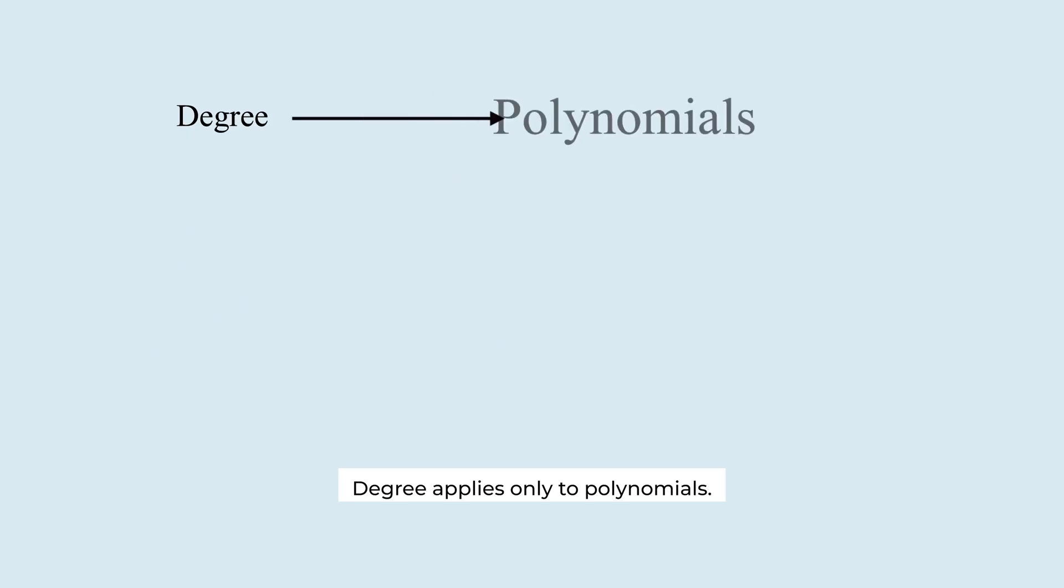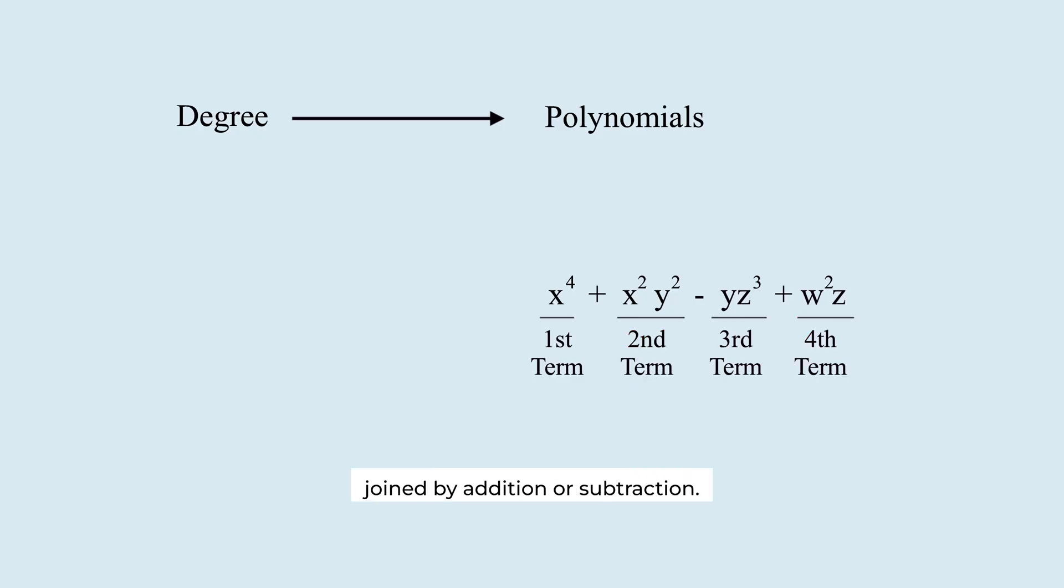Degree applies only to polynomials. This is crucial. A polynomial is an expression made up of terms joined by addition or subtraction. But there's one more important condition. The exponents of the variables must all be natural numbers or zero.